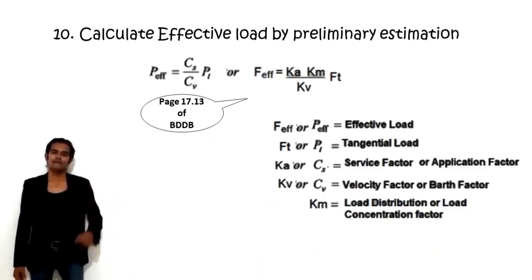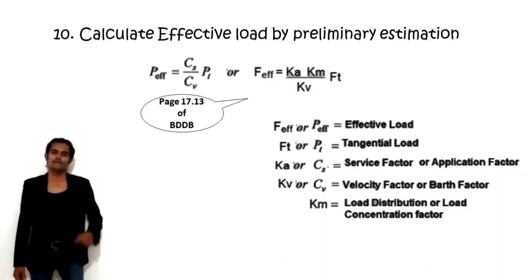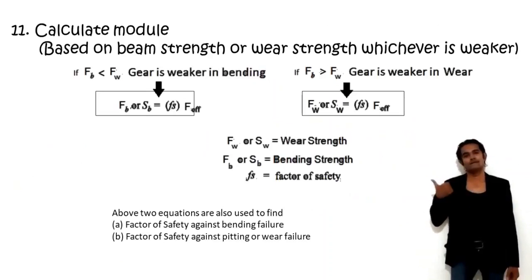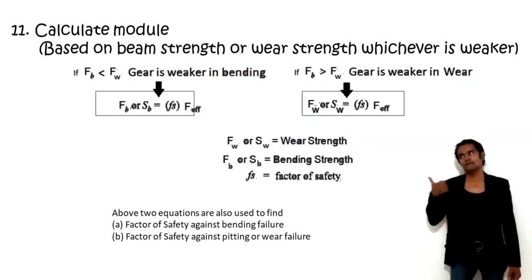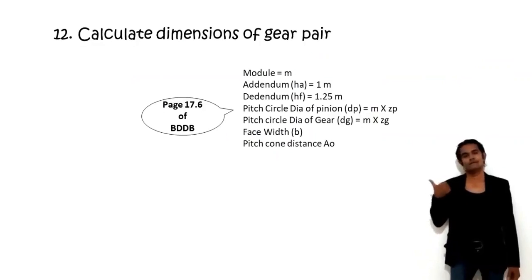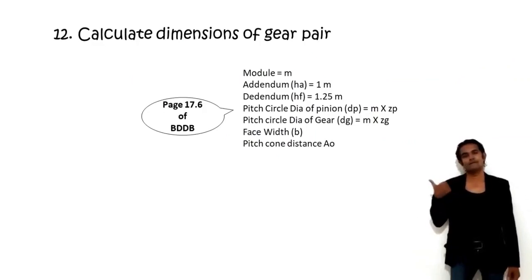Step 10: Calculate effective load as CS × CV × PT, or KA × KM × FT / KV. Step 11: Calculate module — if the gear is weaker in bending, use beam strength = FS × F-effective; if weaker in wear, use wear strength = FS × F-effective. Step 12: Calculate all dimensions — pitch cone distance, face width, pitch circle diameter for gear and pinion, addendum, dedendum, and module.